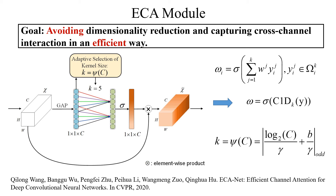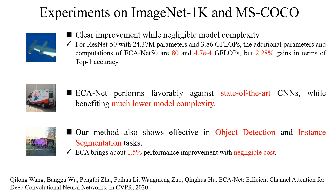For the kernel size of the 1D convolution, here is the guideline for reference. We conducted experiments on ImageNet and MS-COCO. The experimental results show that our method achieves a good balance in model complexity and performance, and gets similar or better results with only dozens of parameters.